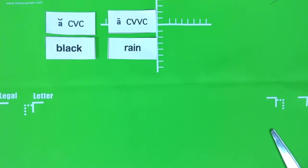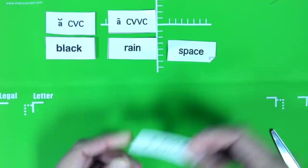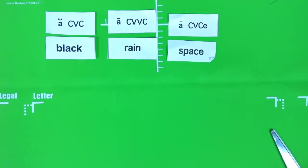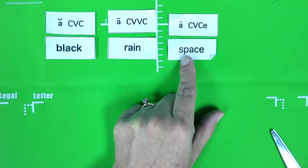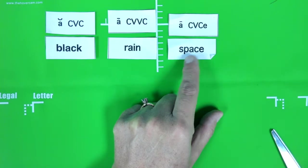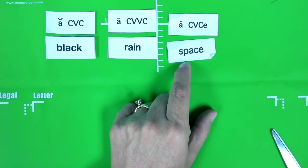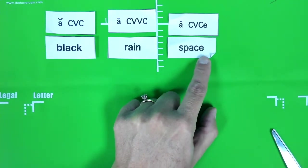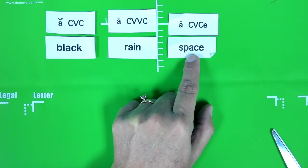Our last anchor word is space. And it is a consonant, vowel, consonant, E word. Again, you can find the vowel A, and on either side there is a consonant, P and C. But this word ends with an E. And when you have a consonant, vowel, consonant word that ends in an E, it makes the A say its name. Space. A.